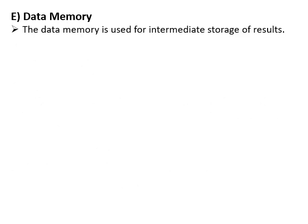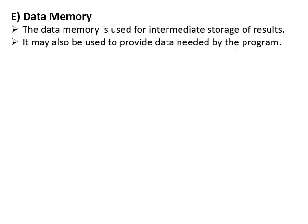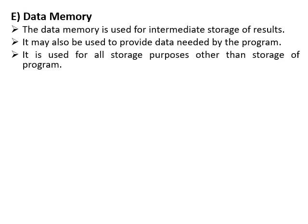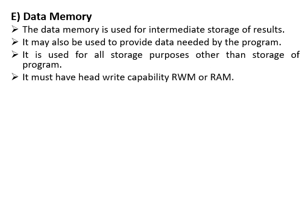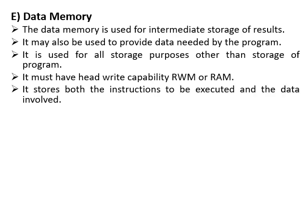Data Memory. The data memory is used for intermediate storage of results. It may also be used to provide data needed by the program. It is used for all storage purposes other than storage of the program. It must have read-write capability — RWM or RAM capabilities. It stores both the instructions to be executed and the data involved.